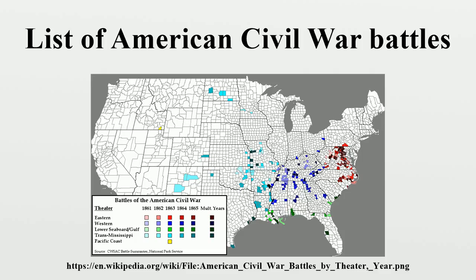This is a chronological summary and record of every engagement between the troops of the Union and of the Confederacy, showing the total losses and casualties in each engagement. It was collated and compiled from the official records of the War Department.